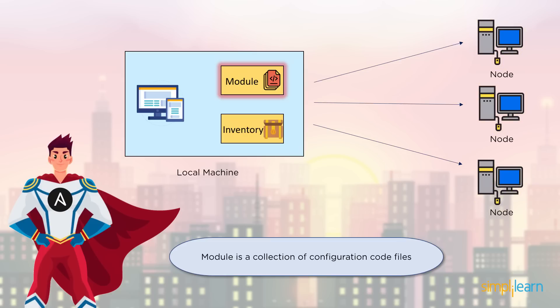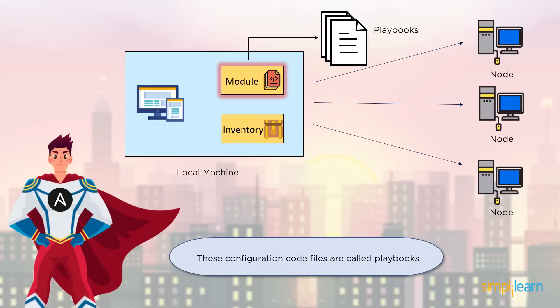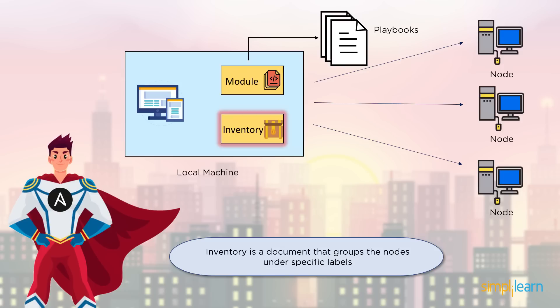At your local machine, you also have a module. A module is a collection of your configuration files, and in the case of Ansible, these configuration files are called playbooks. Playbooks are written in YAML — YAML stands for YAML Ain't a Markup Language. It is honestly the easiest language to understand and learn since it's so close to English. We also have the inventory — a file where you have all your nodes that require configuration mentioned, and based on the kind of configuration they require, they're also grouped together. Later in the demo, we'll look at how the playbook and the inventory are written.